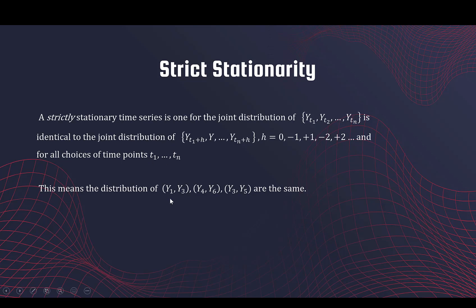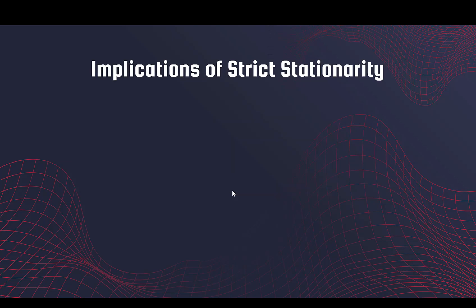For example, if n equals 2, we are looking at two time points. So y1 and y3 will have the same joint distribution as y4 and y6, because all points are incremented by three. And y3 and y5 will also have the same distribution. So all these sets of variables basically have the same joint distribution.